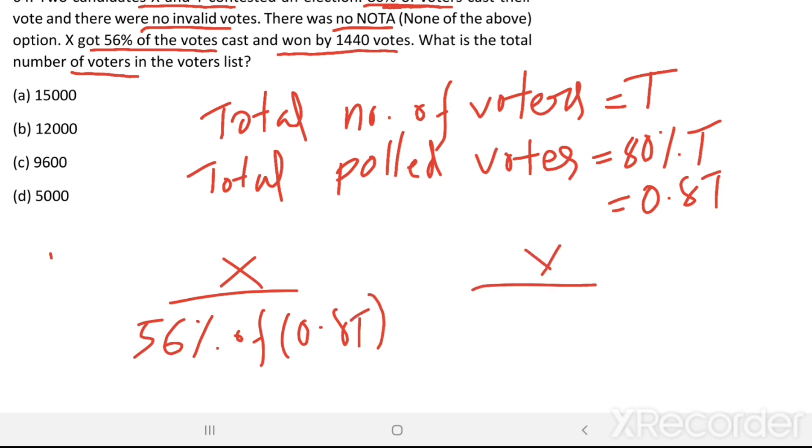Then, the remaining 44%, 44% of 0.80T was won by Y.